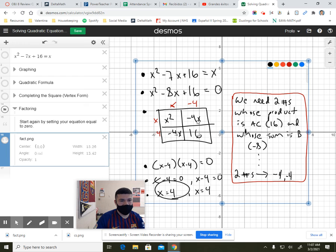And I can think, to fill these diagonals, I simply need two numbers whose product is ac or 1 times 16 and whose sum is negative 8. The two numbers whose product is 16 and sum is negative 8 are negative 4 and negative 4. So I fill in these two diagonals with negative 4x and negative 4x, which you can see combined to give me negative 8x.